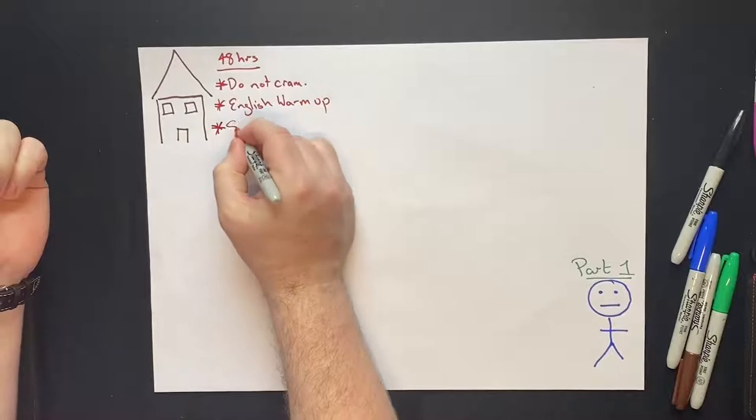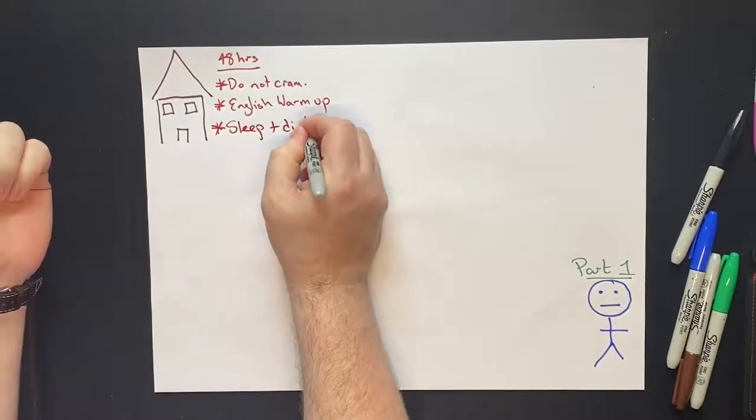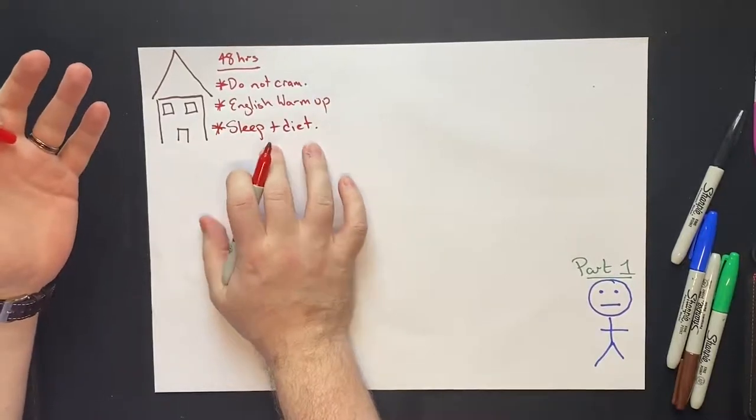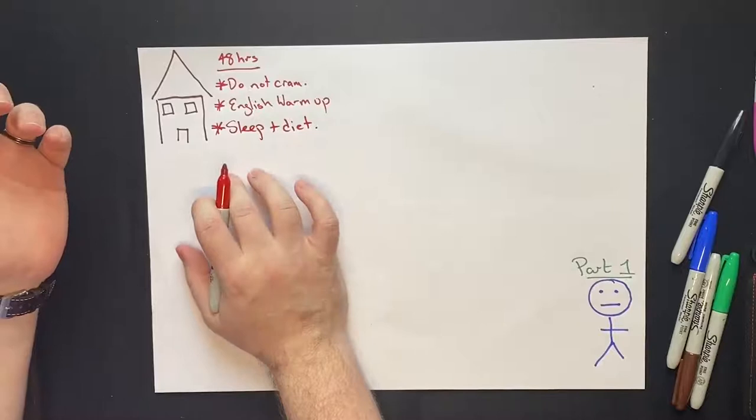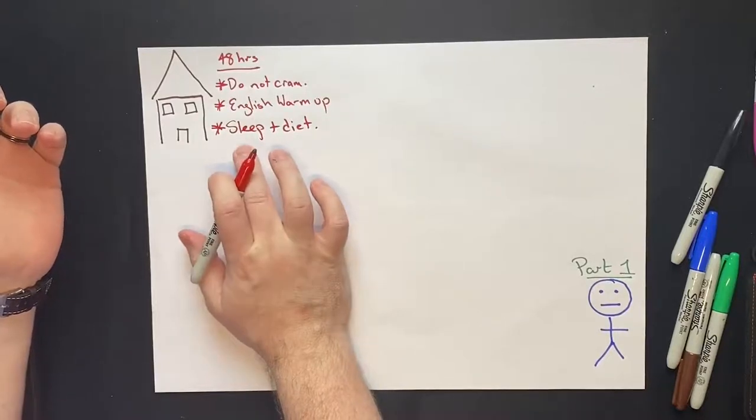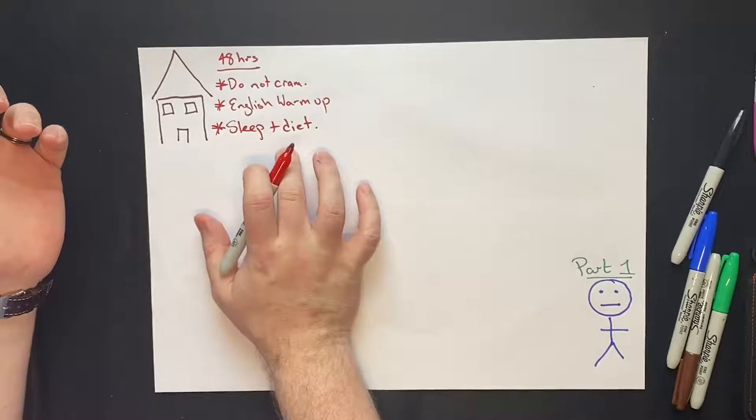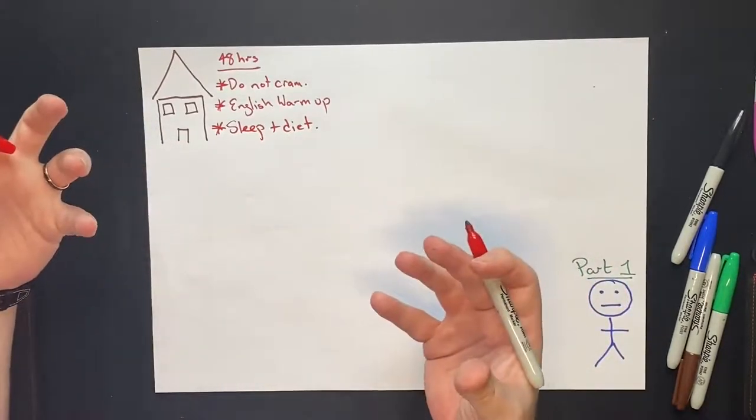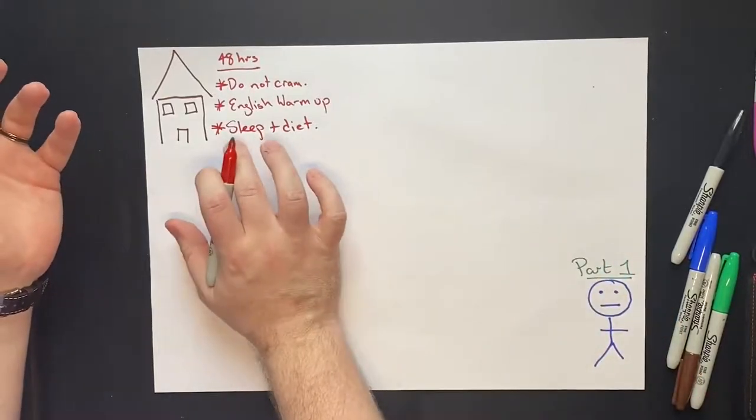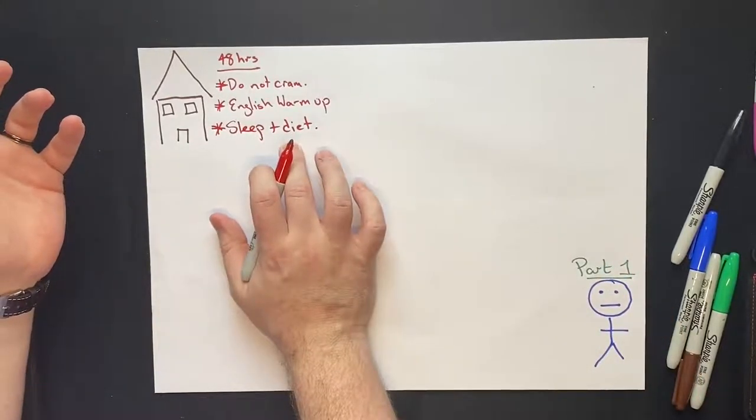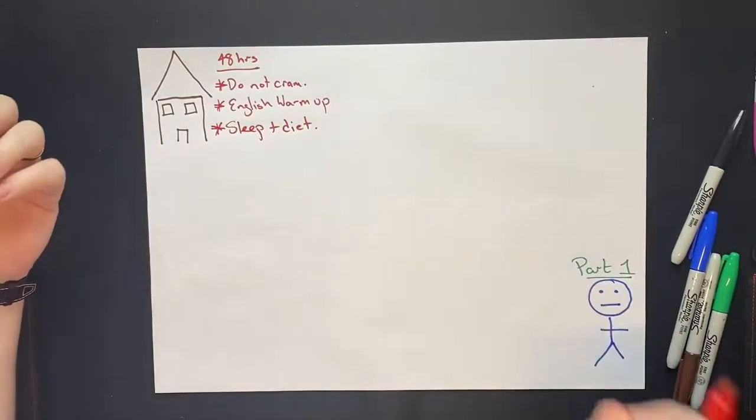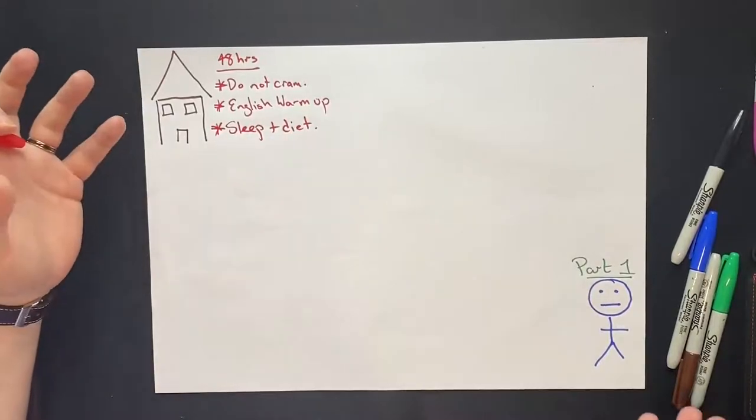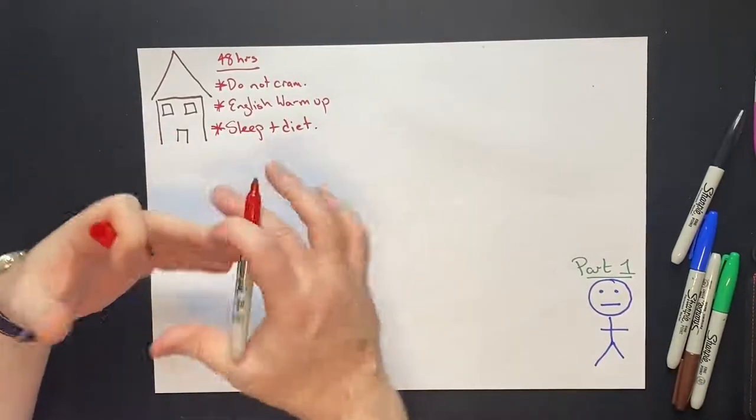Also, you might not consider this, but sleep and diet are really important. We've had students who really deserve a band eight or a band nine and they've got a 6.5 because they didn't sleep very well the night before or they didn't eat that morning and they got to the test center and they just couldn't do anything, because if you don't sleep well and you don't have anything in your stomach, you're not going to have the focus and the energy to actually perform at your best. So make sure that you're getting enough sleep in the days leading up to your test and you're eating a healthy diet.